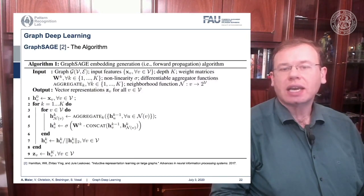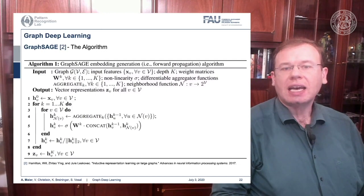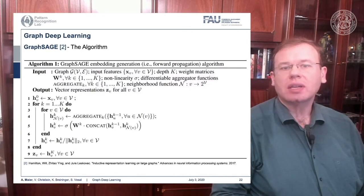For every node, you run the aggregation function that computes a summary over all of your neighbors. The result is a vector of a certain dimension. You then take the aggregated vector and the current configuration, concatenate them, multiply them with a weight matrix, and run through a non-linearity.